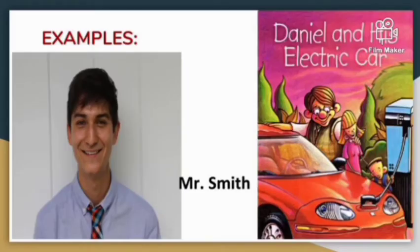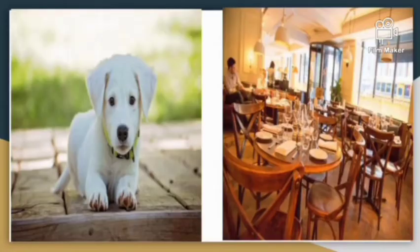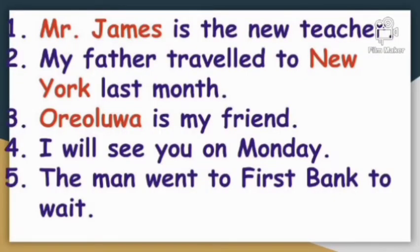Now, looking at the picture: Mr. Smith — that is a man's name. See the storybook: 'Daniel and His Electric Car' — that is the name of the book. I won't just say 'a book'; I'm going to say 'Daniel and His Electric Car.' For an animal, this dog's particular name could be Lucy or Bingo. This is a restaurant — I can say this is Domino's Pizza.